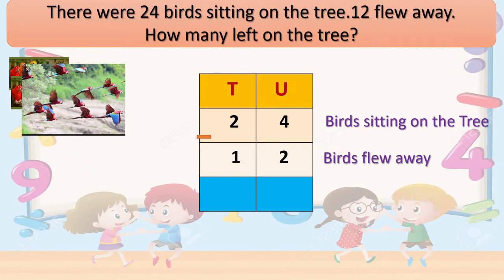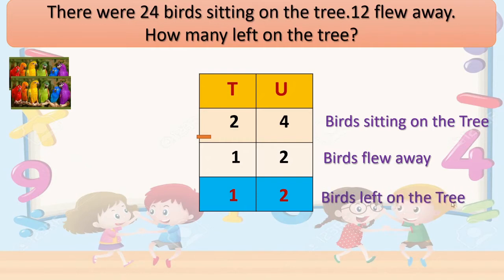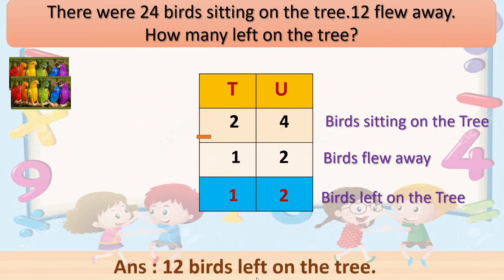They flew away. So how many are left on the tree? Here you can do 4 minus 2, that is 2, and 2 minus 1, that is 1. We got the answer: 12. Here also you can count — these are 12 birds. So we will write birds left on the tree: 12. Our answer is 12 birds left on the tree.